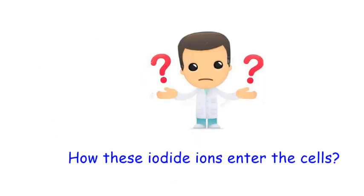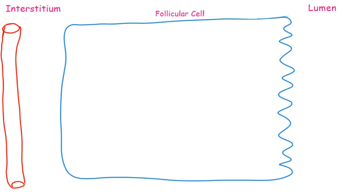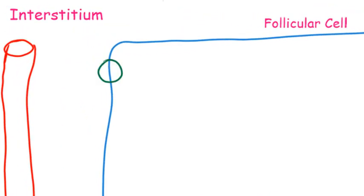Here you will face a question. How do these iodide ions enter the cells? The answer is, the basal membrane of the thyroid cell has the special ability to pump the iodide ion actively to the interior of the cell.